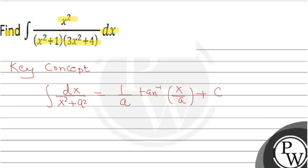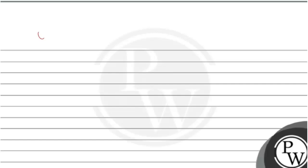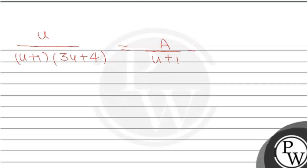In this question, we see (x²+1)(3x²+4). We assume x² = u. The function inside becomes u / ((u+1)(3u+4)). We then set up partial fractions: u / ((u+1)(3u+4)) = A/(u+1) + B/(3u+4).